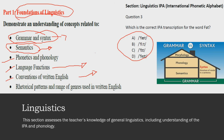The next section deals with rhetorical patterns and the range of genres used in written English. Rhetorical patterns are the ways of organizing information — the rule or principle used to classify items into groups. For example, writers can use particular rhetorical patterns to create personal essays, such as narration, description, how-to, comparison and contrast, cause and effect, classification and division, or argumentation and persuasion. You need to be thorough with all these concepts.